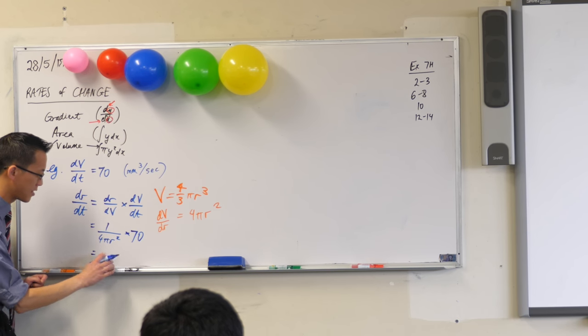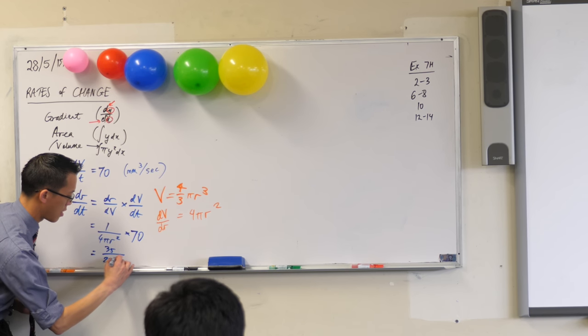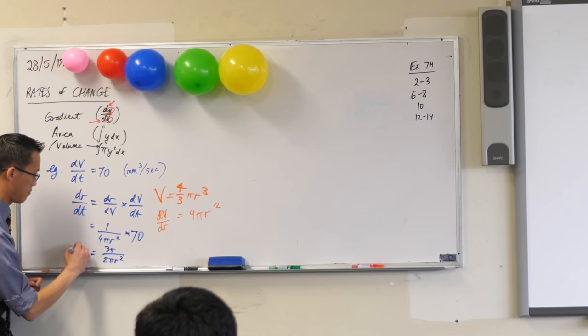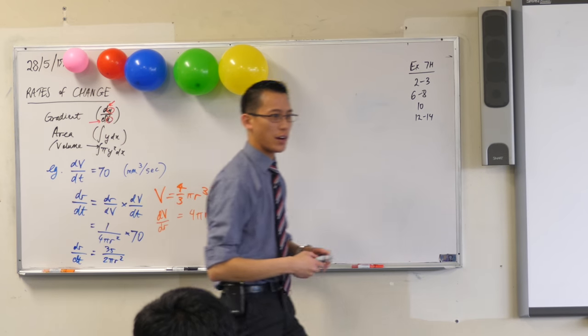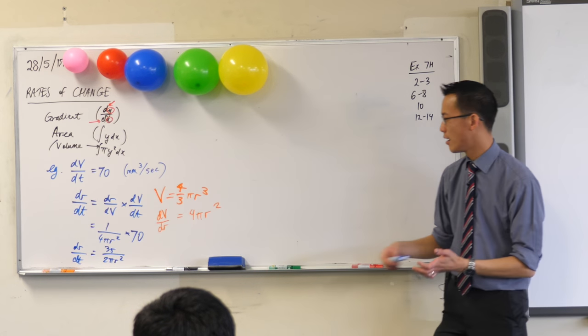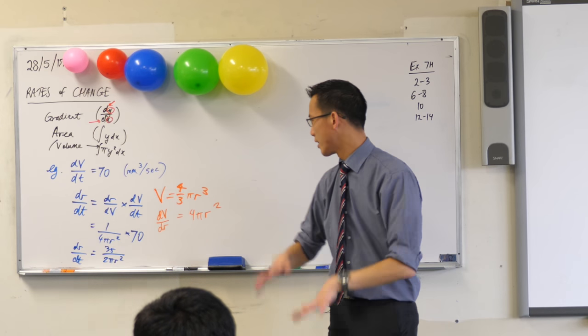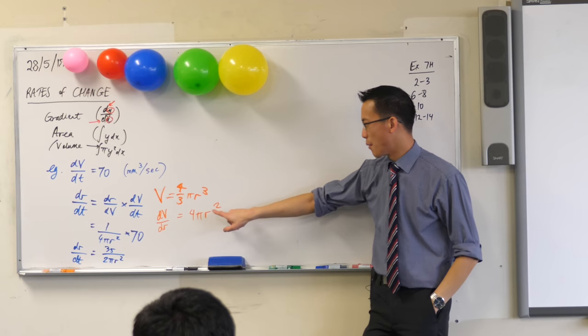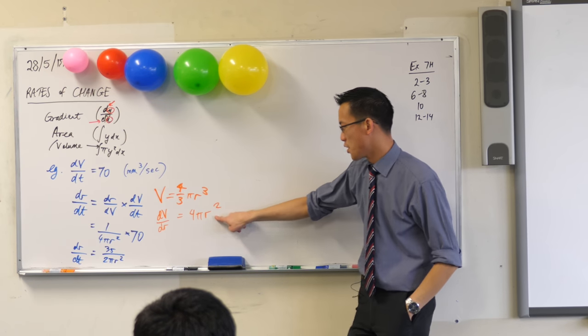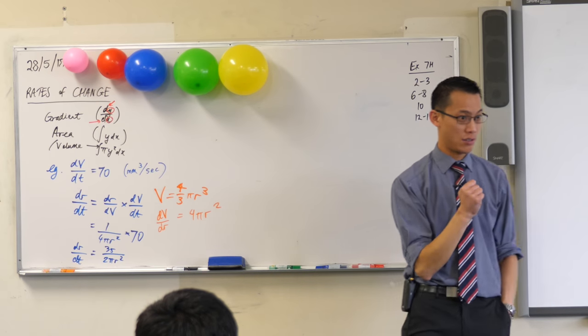So now I can tidy this up just a little bit. I guess I'd write 35 on 4 pi r squared. Okay, how's your brain so far? Does that make sense? What have we done here? We've taken a piece of information that we knew about how quickly air was going in, and then we used some geometry, then we used some calculus, then we used some more calculus, and now we've got a new rate of change.